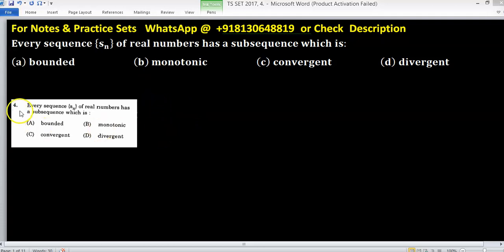In this problem, this snip is for the exact problem given in the question paper, and in the above part I have written the problem for solution. So every sequence Sn of real numbers has a subsequence which is bounded, monotonic, convergent, and divergent.